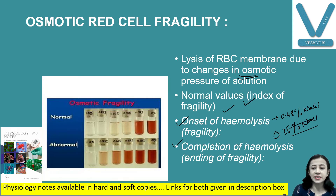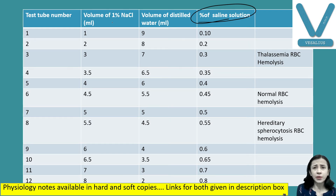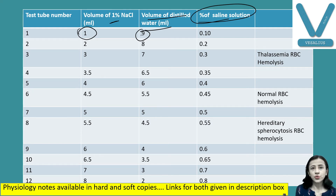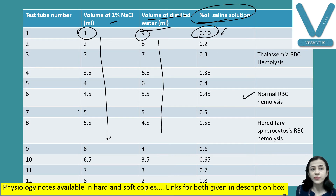We prepare 12 test tubes with different percentages of normal saline solution: 0.1, 0.23, 0.35, 0.4, 0.45, and so on. We take 1% sodium chloride and add distilled water — 1 portion sodium chloride and 9 parts distilled water gives 0.1%. We gradually increase the percentage of sodium chloride while decreasing distilled water. Normal RBC hemolysis starts from the sixth test tube, at 0.40 to 0.45% NaCl.